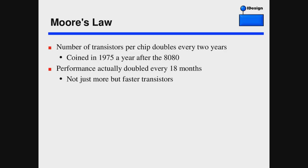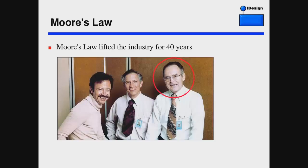Moore's Law, strictly speaking, doesn't talk about performance. It simply talks about the number of transistors per chip. Gordon Moore was one of the founders of Intel, and he observed in 1975 that the number of transistors in the chip doubles every two years. The actual performance doubled every 18 months because computers didn't just have more transistors — they also had faster and smaller transistors. Moore's Law has lifted the industry for 40 years.